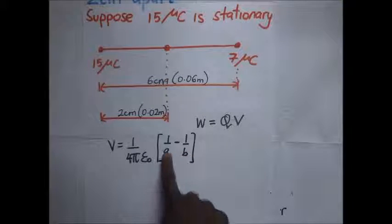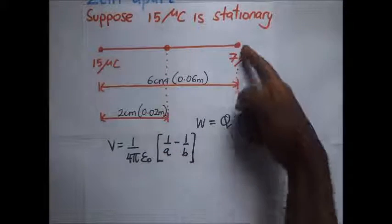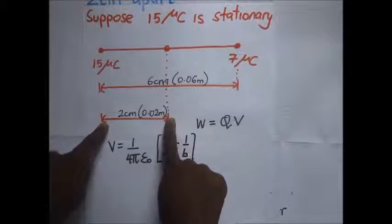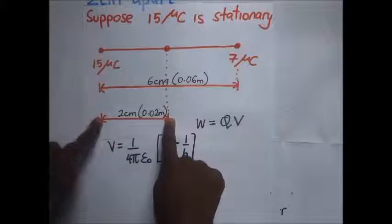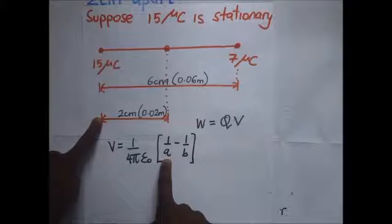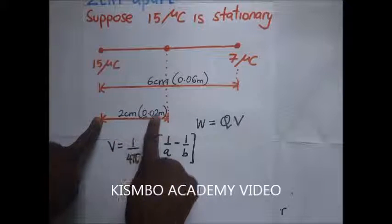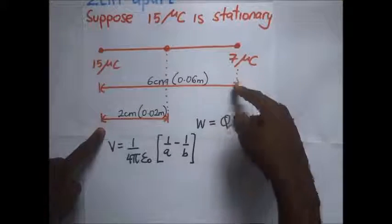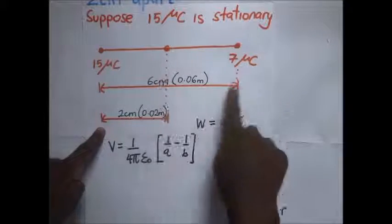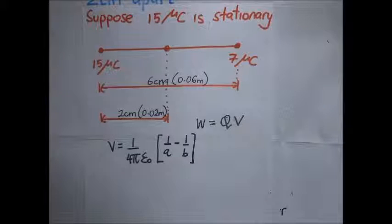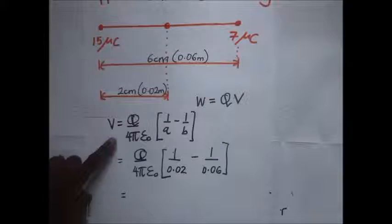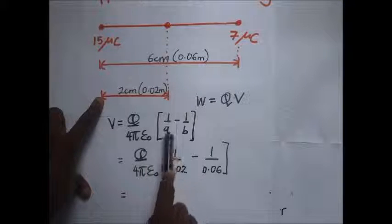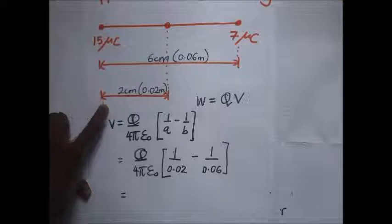So what is our value of a? If the charge has moved to two centimeters apart, and we are assuming that 15 microcoulombs is stationary, then our value of a is two centimeters, which is 0.02 meters, and our value of b is the longer distance — where the charge came from — which is 0.06 meters. We simply substitute: it is going to be q over 4πε₀ into (1/a − 1/b).